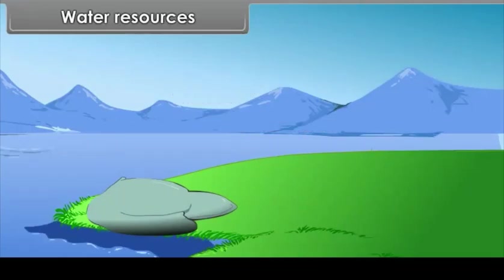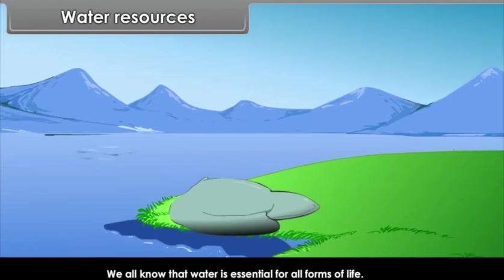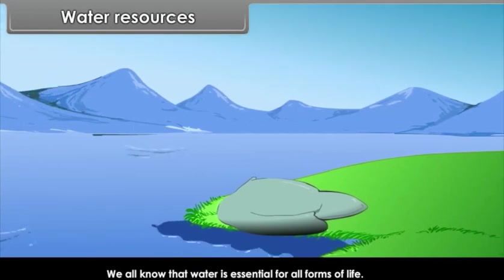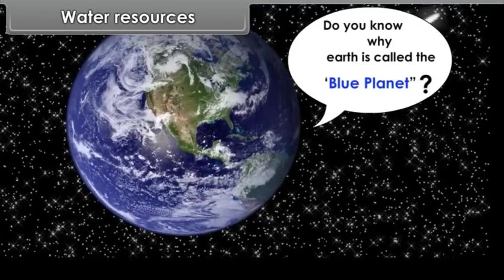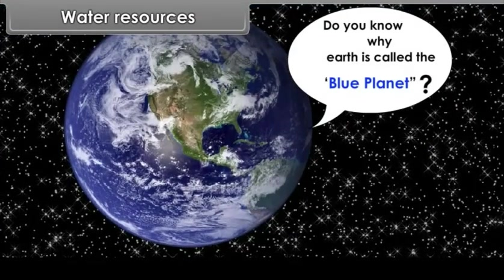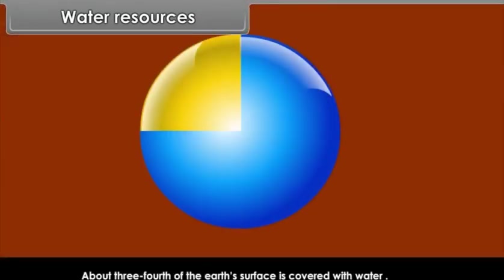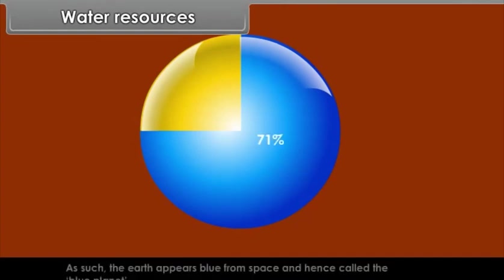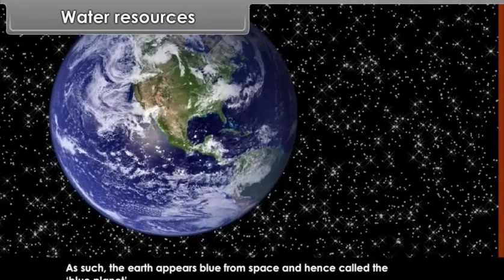Water resources. We all know that water is essential for all forms of life. Do you know why Earth is called the blue planet? About three-fourths of the Earth's surface is covered with water. 71%. As such, the Earth appears blue from space and hence called the blue planet.